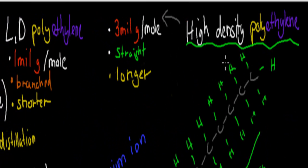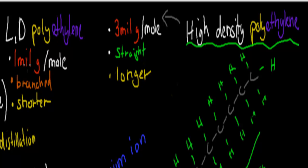Now for the characteristics of each: high density polyethylene has about 3 million grams per mole, and is a straight, long molecule. Low density polyethylene is actually branched, shorter, and only 1 million grams per mole compared to 3 million for high density. Low density is less dense — that's why it's called low density — and it branches off. These properties mean they can be used for different kinds of plastics.